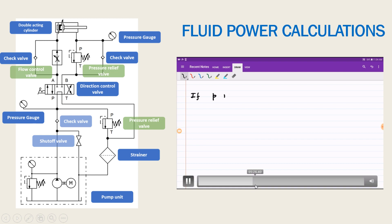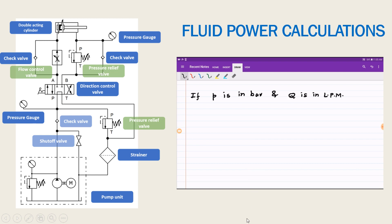Generally in industrial hydraulics and pneumatics, pressure is expressed in bar and q is expressed in liters per minute. How to express the fluid power in these standard units is an important aspect. Let us write down the expression once again: fluid power equals p into q. We know that one bar equals 10 to the power 5 Newton per meter square.